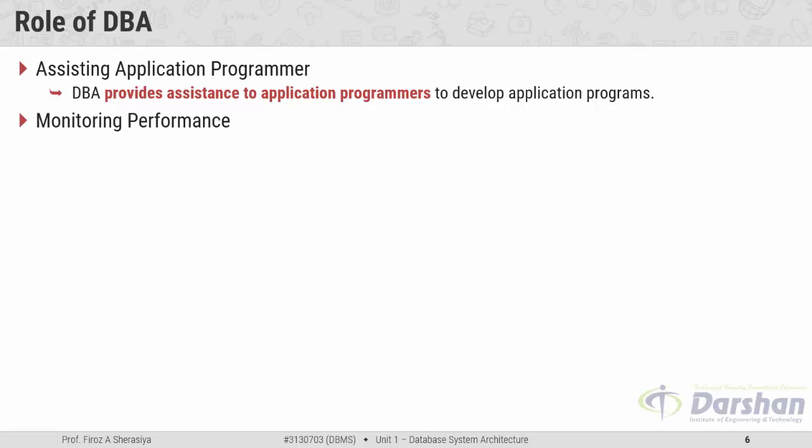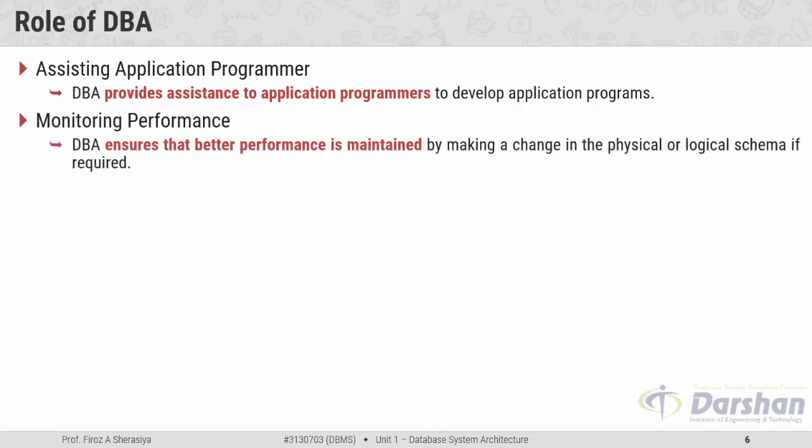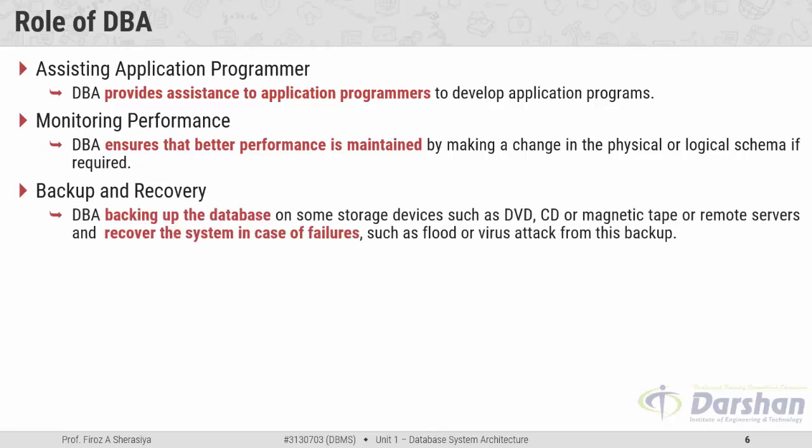The seventh role is monitoring performance. The DBA will continuously monitor the performance of the system and ensure that better performance is maintained. If changes to the physical or logical schema are required, they are carried out by the DBA. The last role is backup and recovery. The DBA will regularly take backups of the database on a secondary storage device such as DVD, CD, magnetic tape, or a remote server, and will recover the system in case of failure.